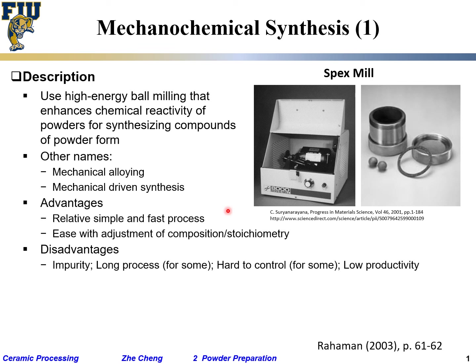The important part to control is chemistry purity, and also controlling particle size and shape. You can imagine it's a pretty random process — how do you control the shape of the particle? Not well. Low productivity is another issue; as you can see, this is a lab-scale setup and scaling it up for industry is not easy.